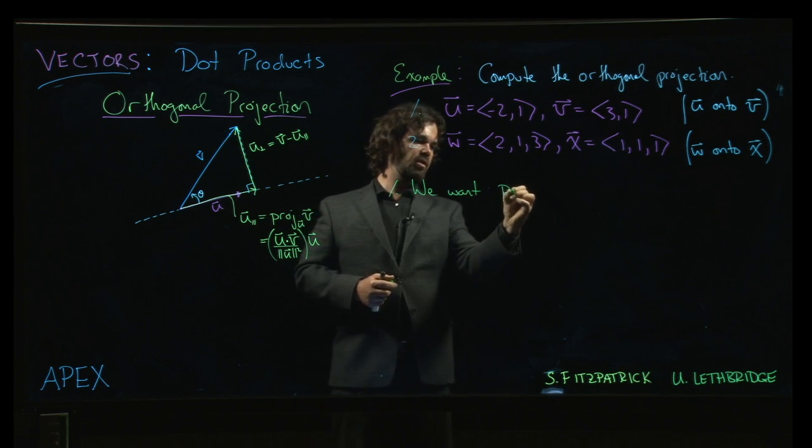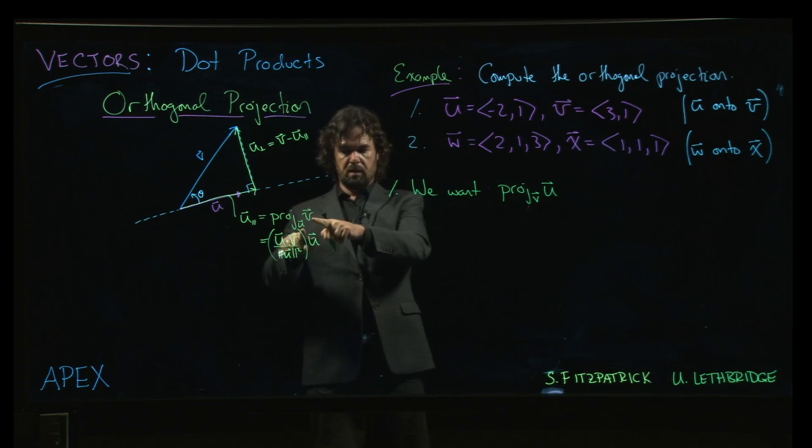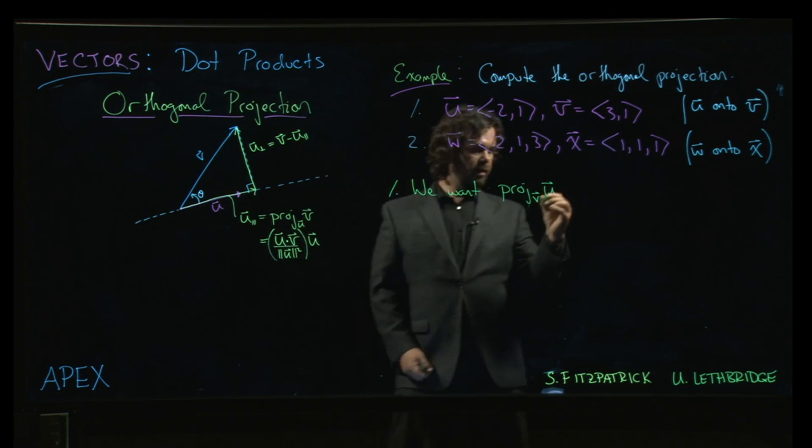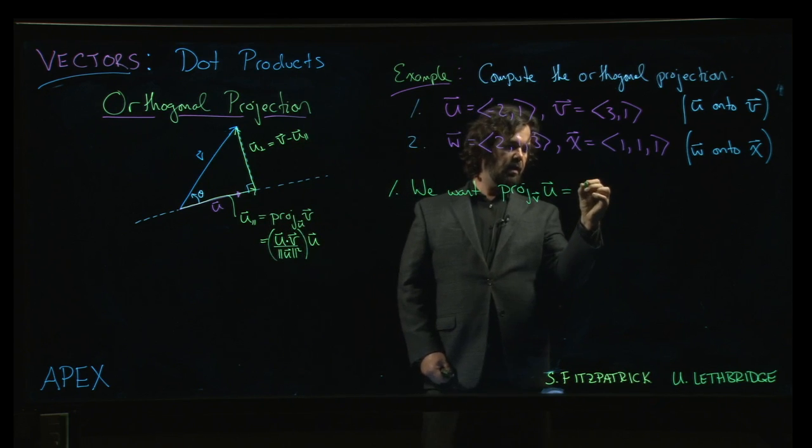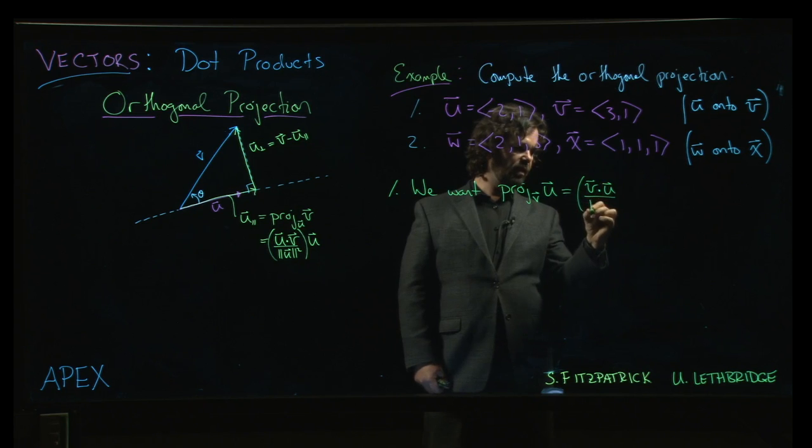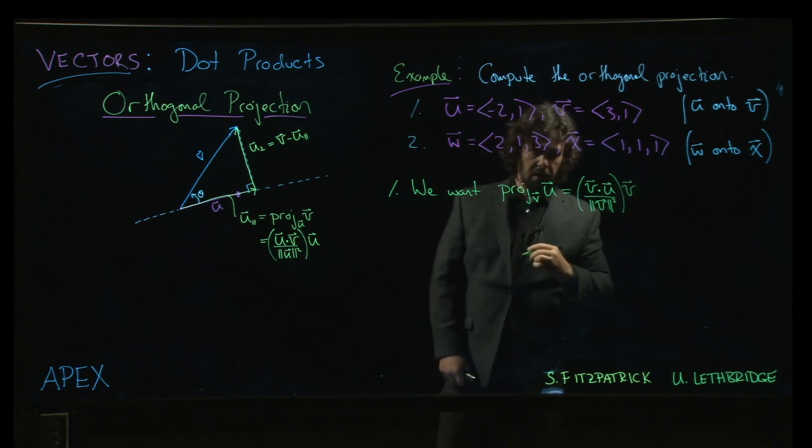So what we actually want here is the projection of u onto v, so we've reversed the roles. It was v onto u, now it's u onto v. So we have to be careful about that. It's going to be v dotted with u over the magnitude of v squared, or v dot v if you prefer, and then multiplied by v.